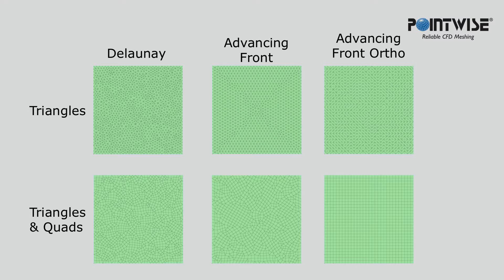A table highlighting the distinct characteristics of each of the six options is shown. When compared to Delaunay, the Advancing Front algorithm will produce triangular surface grids of similar quality but more uniform appearance. In the particular case of domains containing only triangular cells,